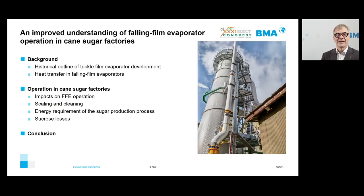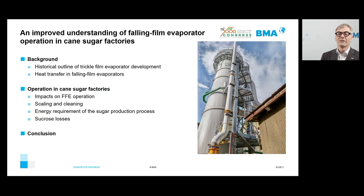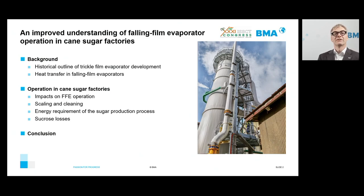In our presentation, we start with some background information. After a historical outline of the Falling Film Evaporator development, we will state some facts about heat transfer that are particularly relevant for Falling Film Evaporators. The main chapter deals with their operation in cane sugar factories, including scaling and cleaning. The energy requirement of the sugar production process and sucrose losses will also be covered, before concluding with a personal statement.